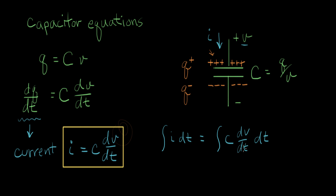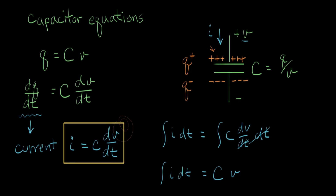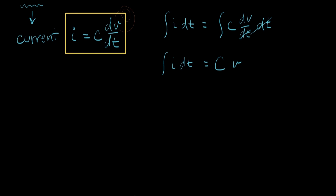On the right side, I have basically the integral of dV — this is an integral acting like an anti-derivative. What function has a derivative of dV? That would be just plain V. So I can rewrite this side of the equation: the constant C comes out of the integral, and we end up with C·V on one side equal to the integral of I dt. We're developing what's going to be called the integral form of the capacitor IV equation.